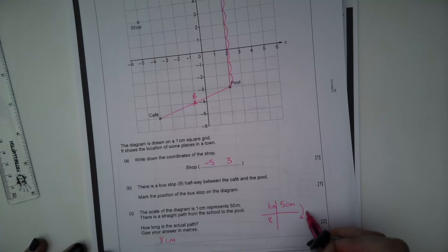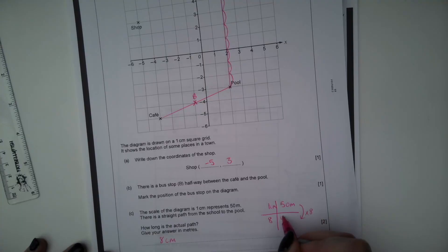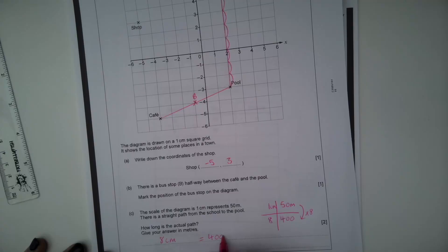Every one centimeter represents 50 meters. So if one centimeter represents 50 meters and we've got eight centimeters, we need to multiply 50 by eight. Five times eight is 40, 50 times eight is 400. So the actual path is 400 meters in real life.